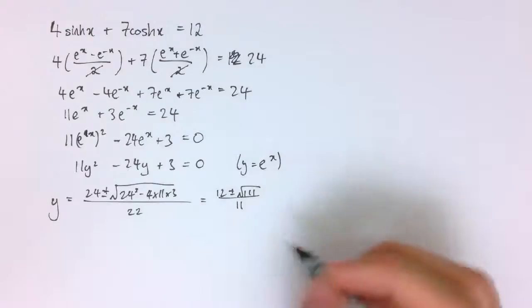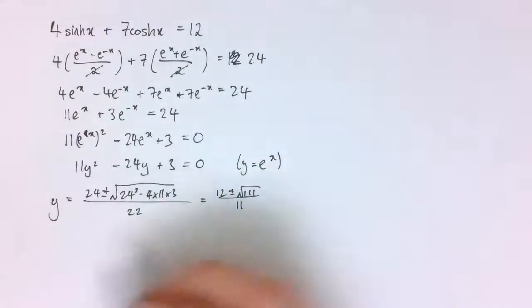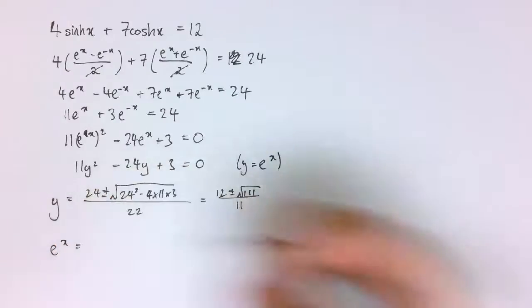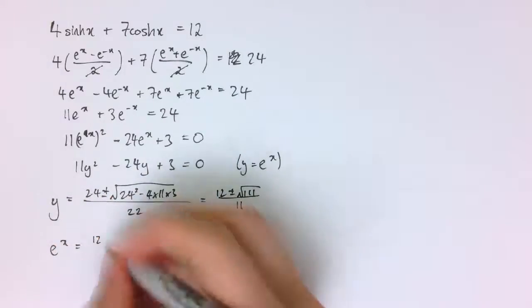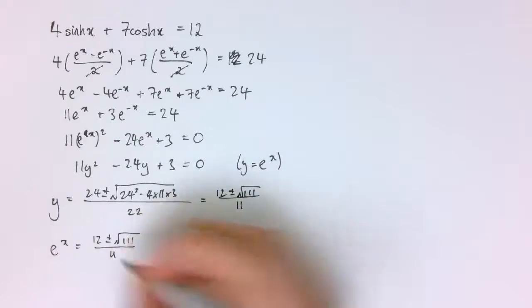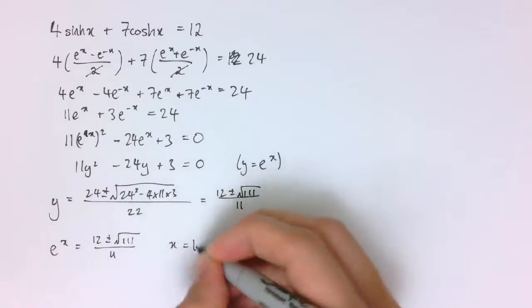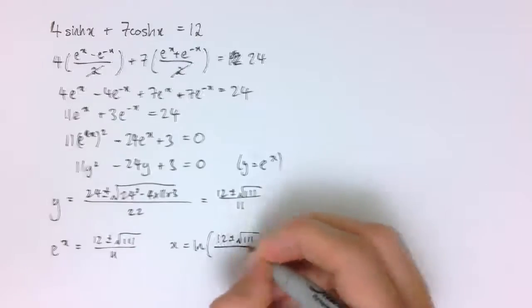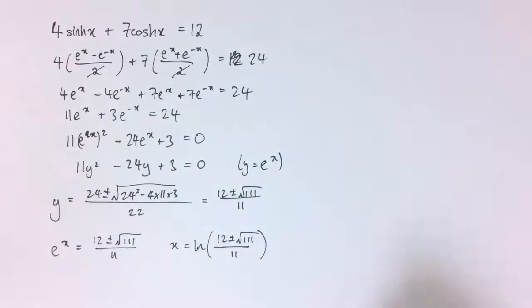So they are my values of y and the y was e^x. This was an equation in x originally so actually I've got e^x equals 12 plus or minus the square root of 111 divided by 11. So x is the natural logarithm of 12 plus or minus √111 divided by 11, two different solutions there.